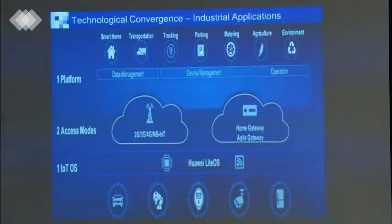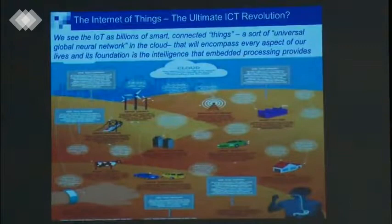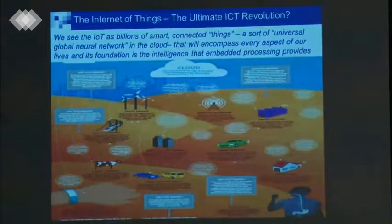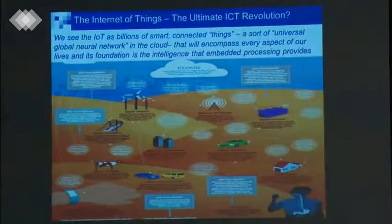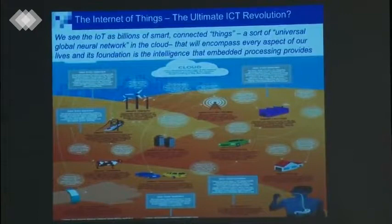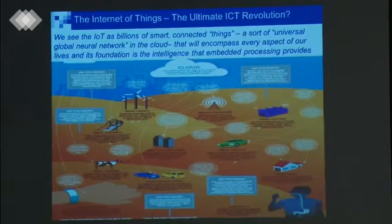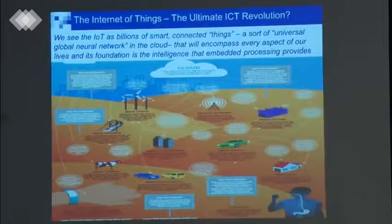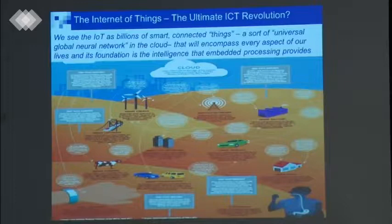What is the Internet of Things? The basic idea has been explained by the IBM slide: you have devices everywhere, embedded computers, sensors and actuators. You collect information — you have a kind of neural system — over a variety of networks, and send it to the cloud. In the cloud you make analysis, data analytics and things like that. This provides the intelligence, and you send back orders to all these devices to manage people and resources in the best possible manner. IoT: billions of smart connected things, a sort of universal global neural network in the cloud.